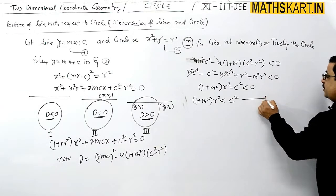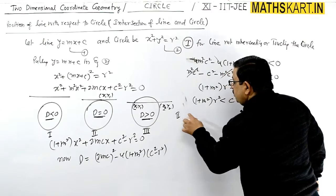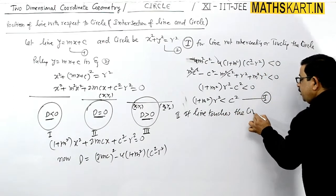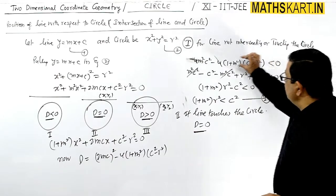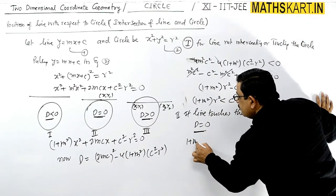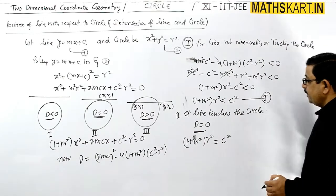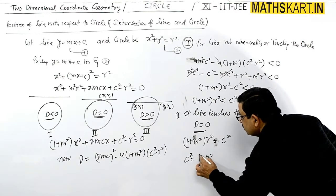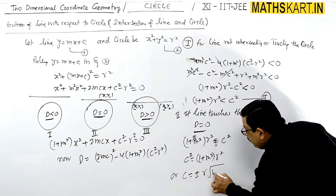That is the first case. Now the second important case: if the line touches the circle, then D = 0. Setting discriminant equal to zero: (1 + m²)r² = c², so c = ±r√(1 + m²). This is the condition of tangency.